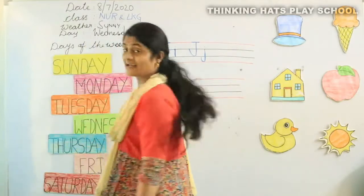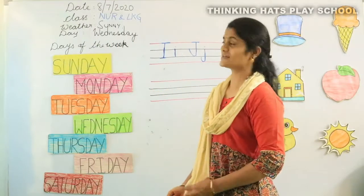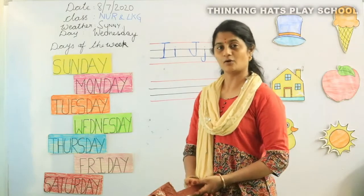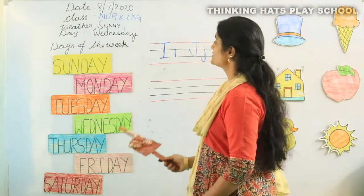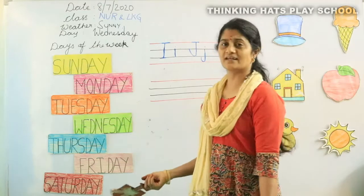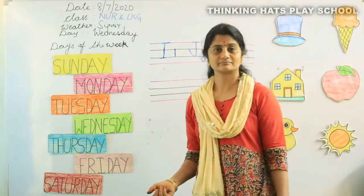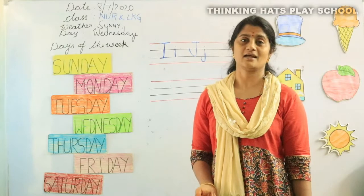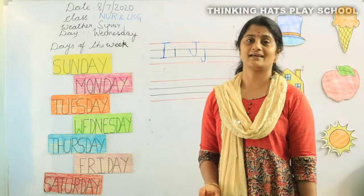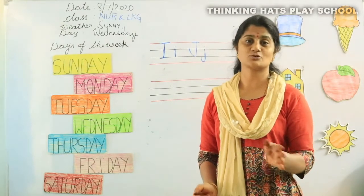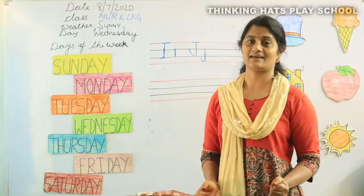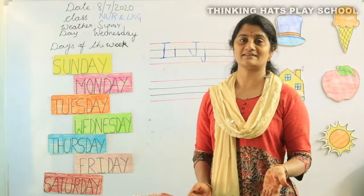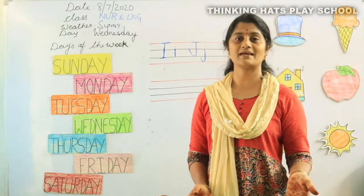Let's learn the calendar first. First we will learn the number of days and then what is the day today? Let's have a look. Today, what is the day today? Today is Wednesday. Yesterday was Tuesday, so today will be Wednesday. If yesterday was Tuesday, today will be Wednesday and tomorrow will be Thursday.